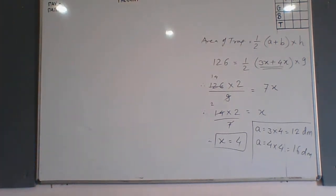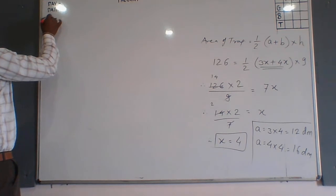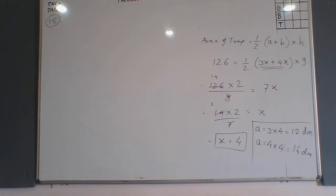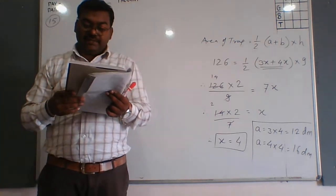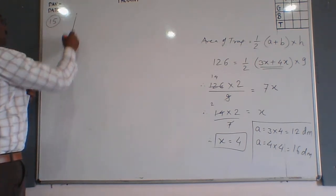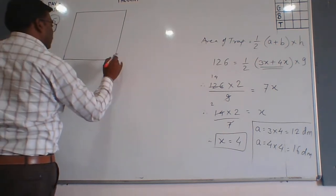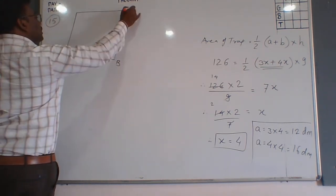The next question we are solving is question number 15 from the worksheet. The question is: a parallelogram has sides 20 cm and 30 cm. Let us draw the diagram. The parallelogram is named ABCD.